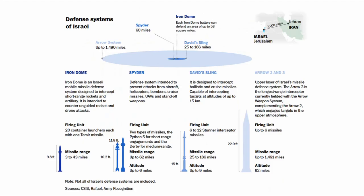Israel's defense system helped to minimize the impact of the attack. Israel's Iron Dome and Arrow 3 system were credited with shooting down most of the drones and missiles from Iran. The Iron Dome is a mobile all-weather missile defense system designed to detect and shoot down short-range rockets fired into Israel. It also can be used against enemy artillery and drones. The Iron Dome can detect and engage a rocket up to 40 miles away.